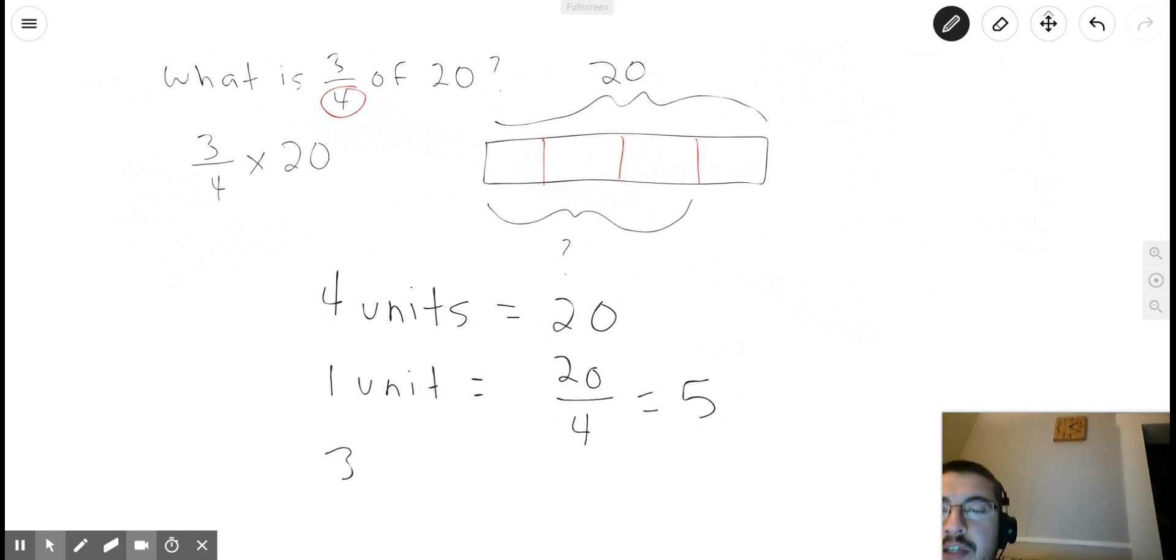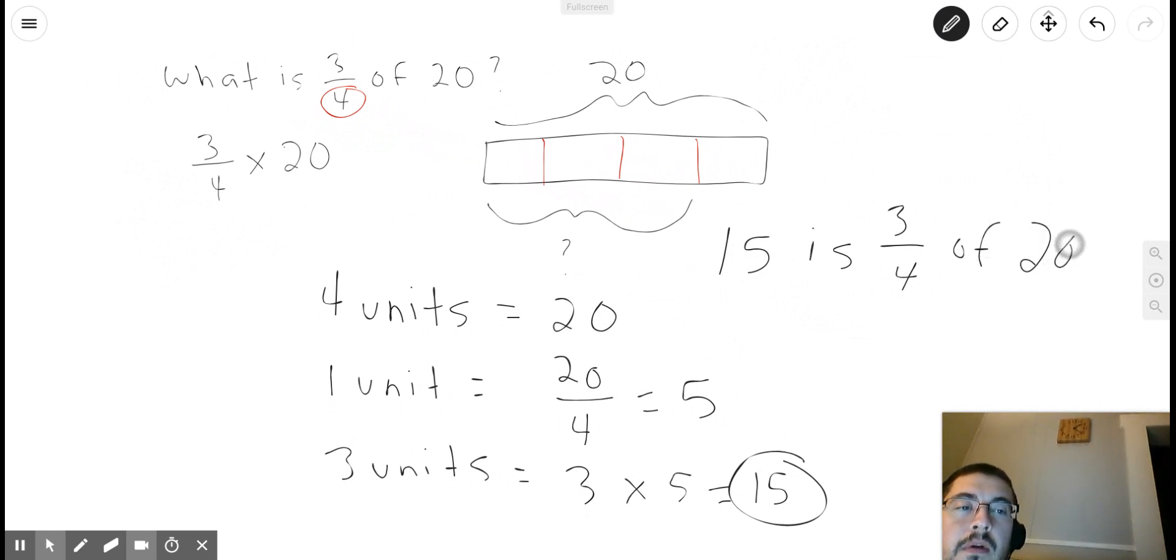And so if we want to know how much three units is equal to, we're going to do three times the value of one unit, which is five. So we have three times five, and we get 15. And so the answer to the question, what is three-fourths of 20? 15 is three-fourths of 20.